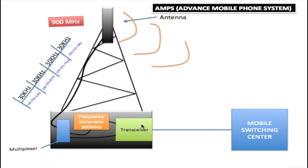These instructions may include ringing or any other communication between the mobile switching center and the base station, all sent over this digital channel. In this particular case it will be telling the base station to use a 900 megahertz frequency to communicate with the cell phones. The transceiver will send this information to the frequency generator, where it will generate a 900 megahertz frequency and send it off to the multiplexer.